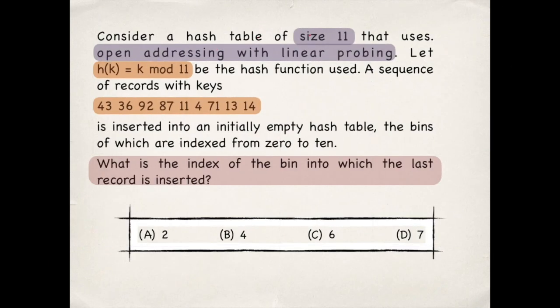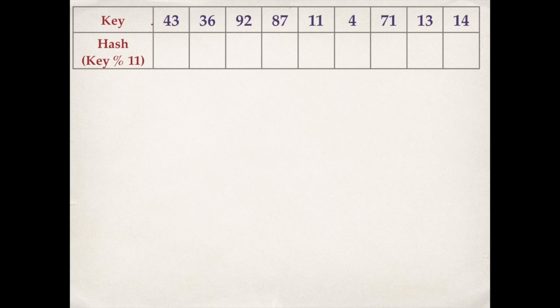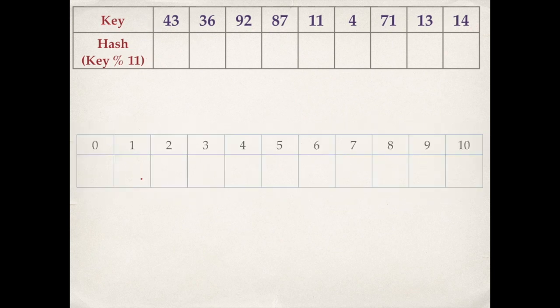Given an empty hash table of size 11 that uses open addressing with linear probing, a hash function is given and we need to insert a sequence of keys into this hash table and find the index of the bin into which the last record is inserted. This table contains a mapping of key and hash value. The hash table is of size 11, indexed 0 to 10, which is initially empty.